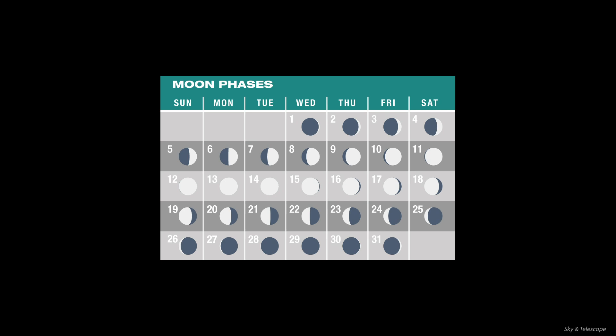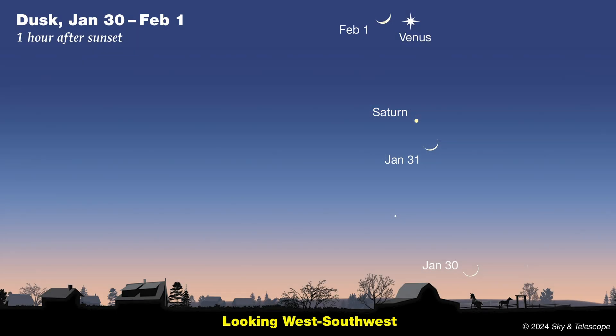Speaking of the moon, let's quickly check its cycle of phases this month. First quarter is on January 6th, and the full wolf moon follows on the 13th. Last quarter falls on the 21st, and new moon is early on January 29th. So watch for a razor-thin crescent to pop into view low in the west after sunset on the 31st.